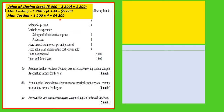Having done that, we work out the sales. The 3,800 units sold at $30 per unit gives us $114,000.